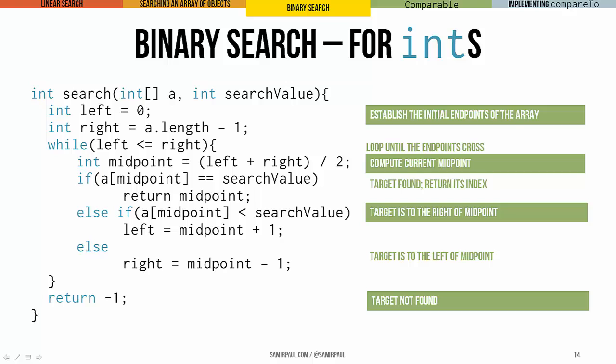And if our midpoint is equal to the target, we return right away. We found it. Otherwise, we need to do a little comparison. We need to see, is our midpoint less than our target value or is it greater than our target value? And based on that, we're either going to adjust left or we're going to adjust right. And ultimately, if we get to this while loop and our left and right endpoints cross, in other words, we end up with right being greater than left, well, that just means that the element we were looking for is not in the array and we can return minus one because it just wasn't there. We didn't find the target.